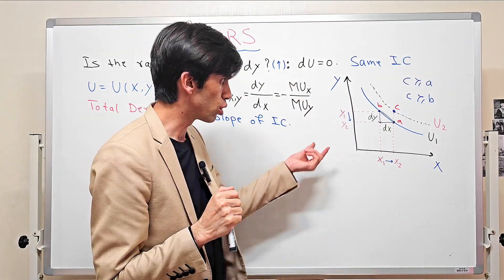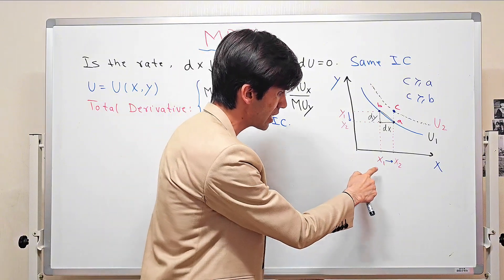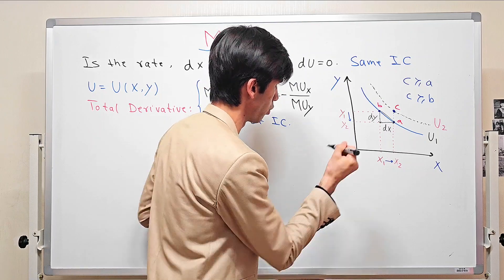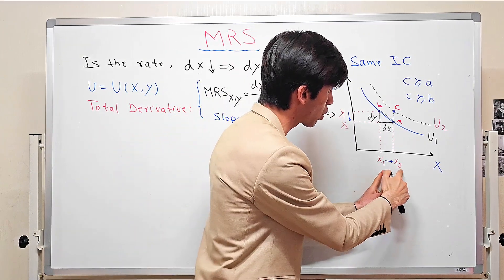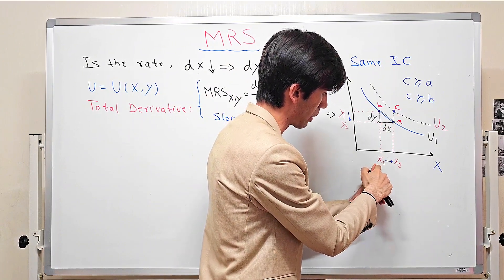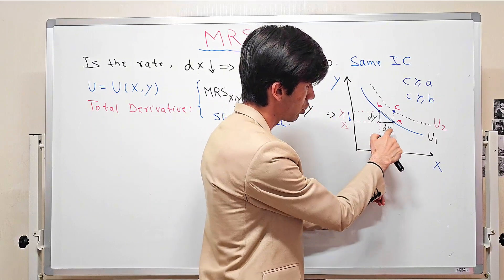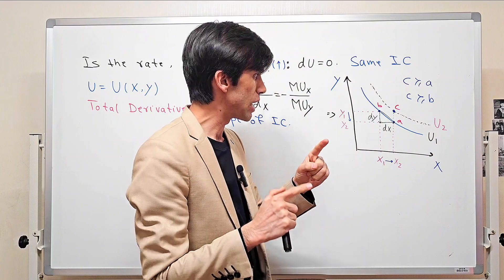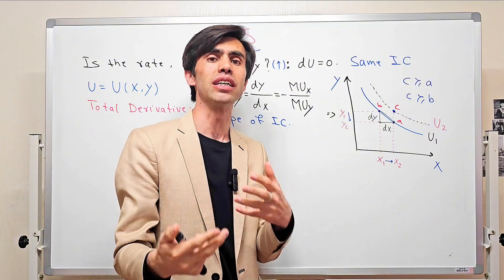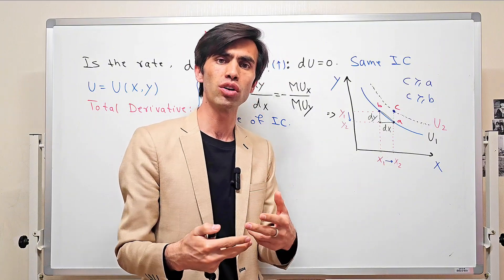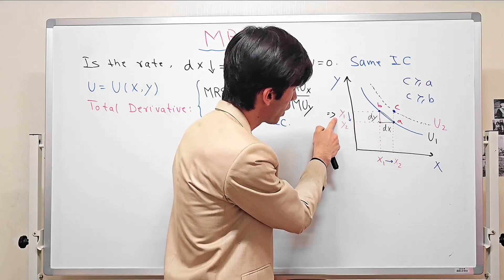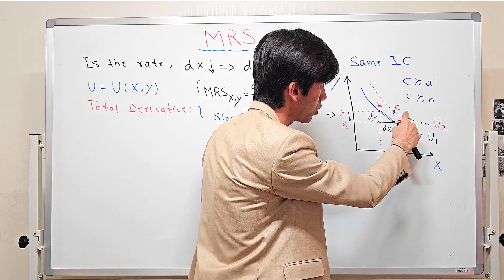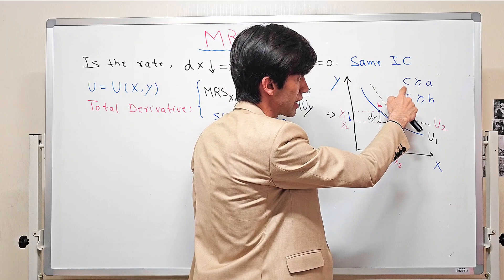Another way to ask: why do we need to reduce the consumption of y in order to keep our utility level fixed? Suppose we do not change the consumption of y. We increase our consumption of x from x1 to x2 but we keep the consumption of y at y1. Here we are moving to another point in our plane — when moving from x1 to x2 but keeping y at y1, we move to another point C, which is outside our initial indifference curve.